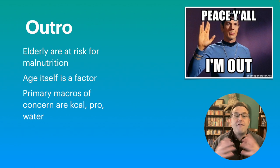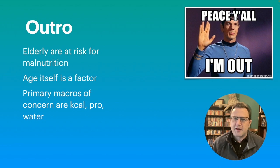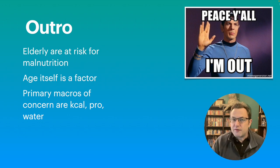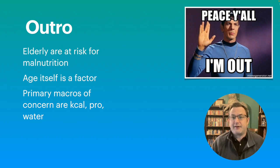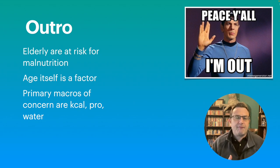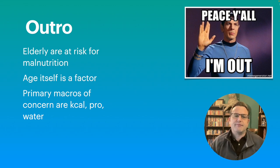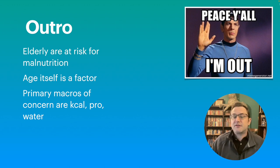That is a very brief intro — we're going to go into more detail later on. Remember: the elderly are at risk for malnutrition, and to some degree they are at risk just because they're old — that is itself a risk factor. When we talk about macronutrients especially, the most common concerns are calories, protein, and maybe water. That's the intro. You guys have a good one, and I'll catch you next time.